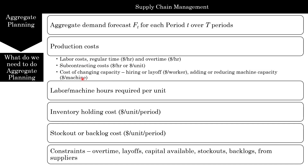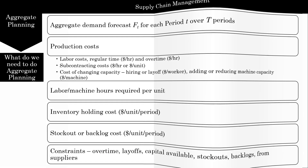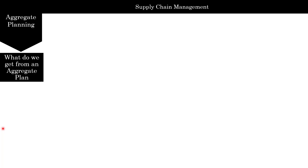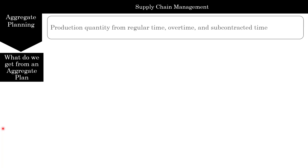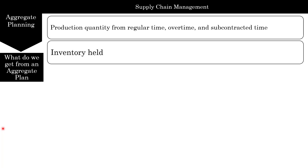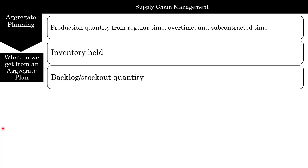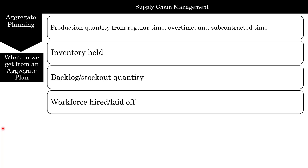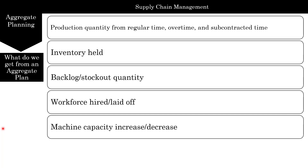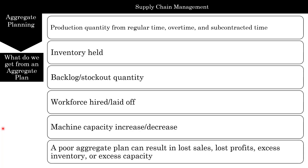There are also constraints: overtime, layoffs, capital available, stockouts, and backlogs from suppliers — these are all limitations to the plan. The output of an aggregate plan includes production quantity from regular time, overtime, and subcontracted time; inventory held; backlog or stockout quantity; workforce hired or laid off; and machine capacity increased or decreased. A poor aggregate plan can result in lost sales, lost profit, excess inventory, or excess capacity — so it's important to have a good aggregate plan.